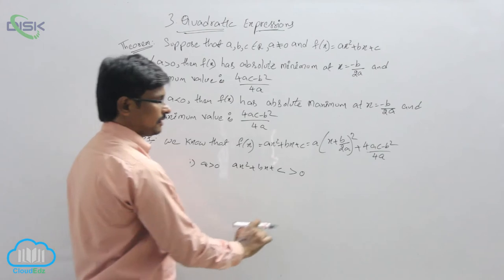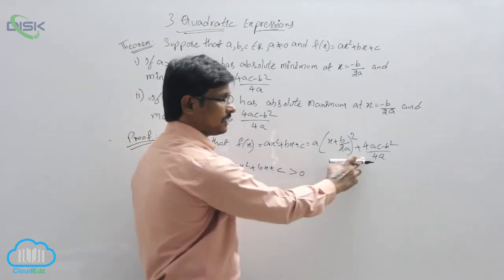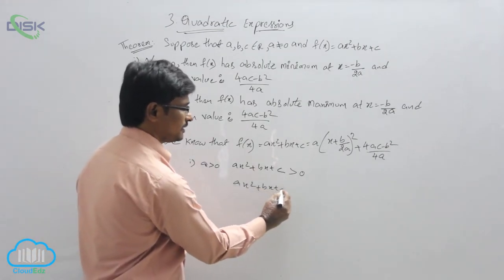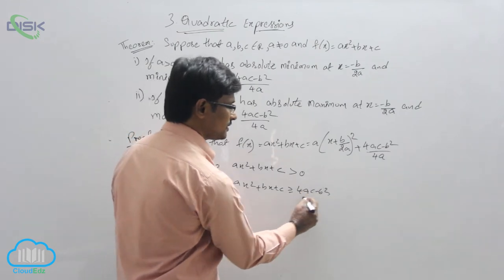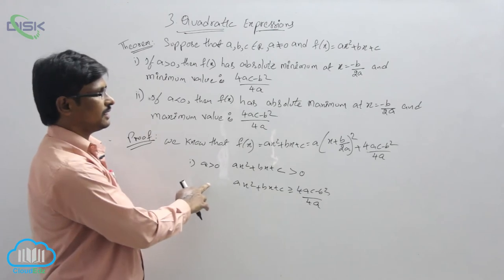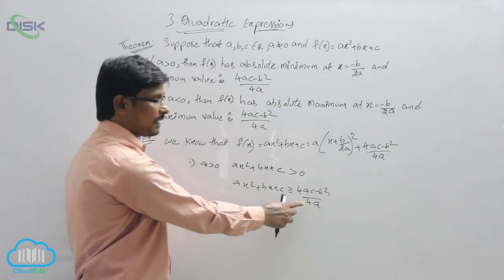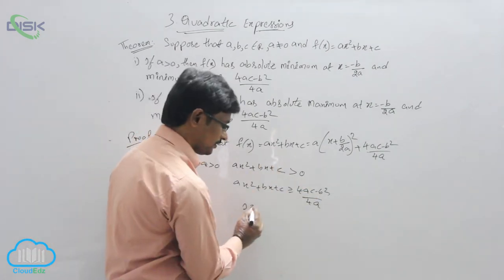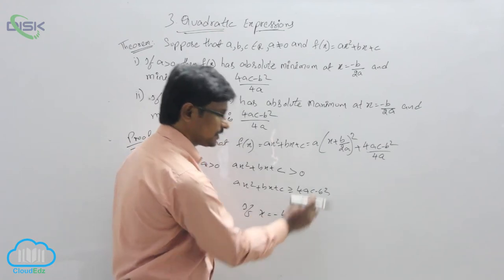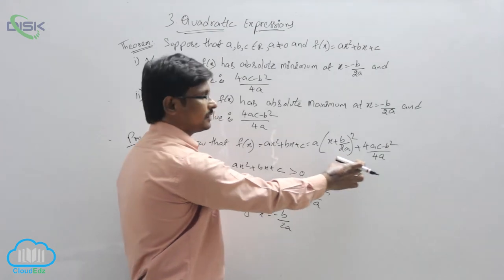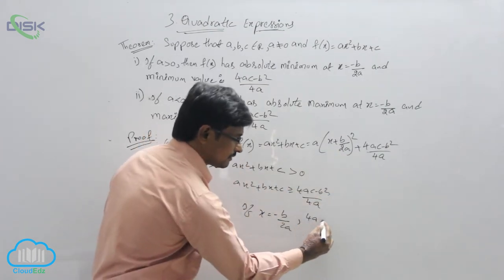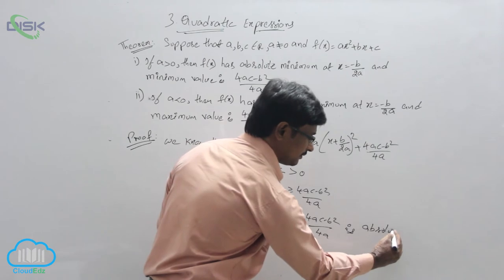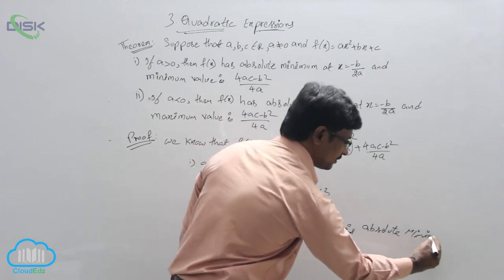This means ax² + bx + c ≥ (4ac - b²)/4a. So if a > 0, the absolute minimum value is (4ac - b²)/4a, which occurs when x = -b/2a, because at that point the squared term is 0, making (4ac - b²)/4a the absolute minimum value.